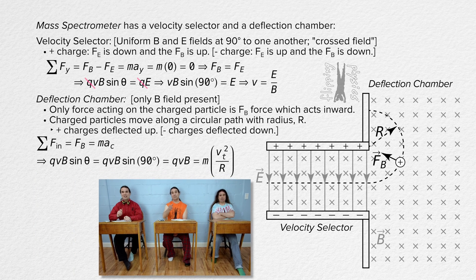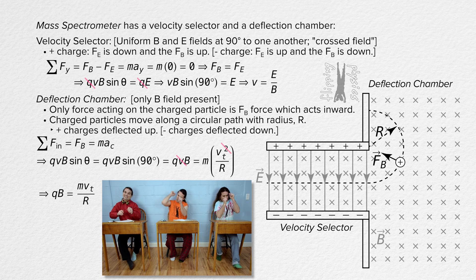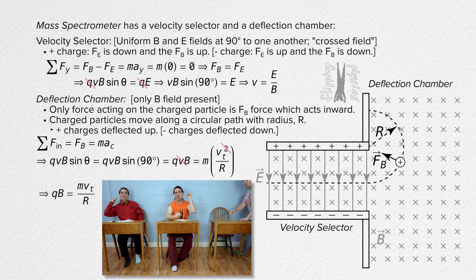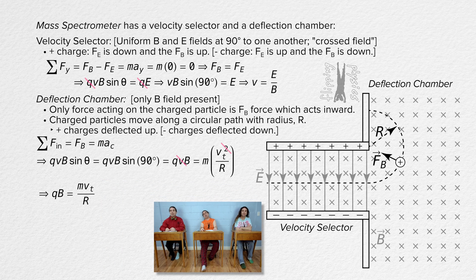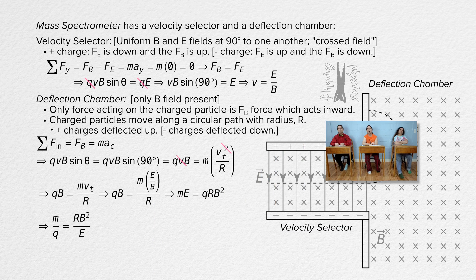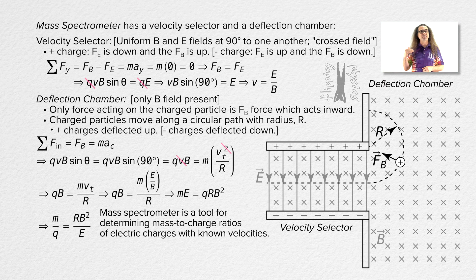Everybody brought one velocity to the party. We can substitute electric field divided by magnetic field in for velocity. Rearranging the equation gives us mass times electric field equals charge times radius times the magnetic field squared. Solving for the ratio of the mass to the charge of the particle: mass over charge equals radius times magnetic field squared all divided by electric field. The mass spectrometer is a tool for determining the ratio of the mass to the charge of a charged particle, and we also know the velocities of these charged particles.